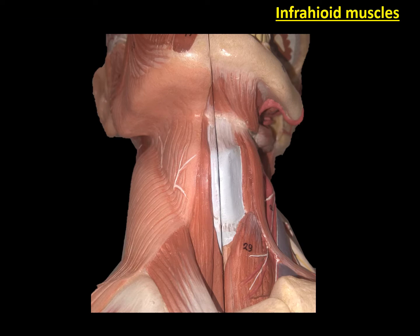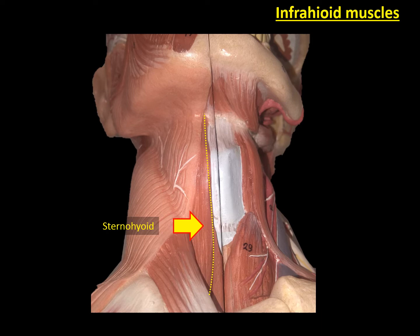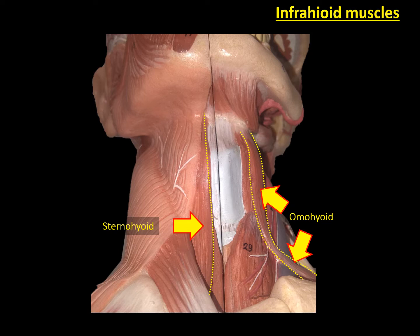At the left-hand side of the model, we can see the infrahyoid muscles. We have removed the platysma and the sternocleidomastoid muscles. We can see a very long muscle that goes from the sternum and part of the clavicle up to the hyoid bone — that is the sternohyoid muscle, which is a superficial and anterior muscle. Lateral to this muscle, we can observe the omohyoid muscle, which has two bellies, the superior and inferior.